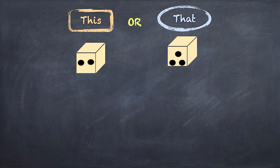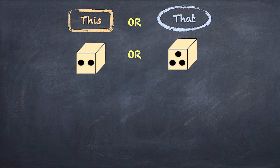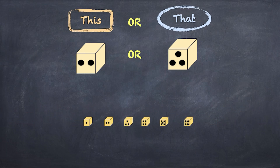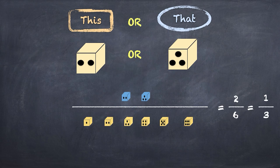But what about the probability of this or that happening? Let's think about throwing a dice and calculating the probability of throwing a two or a three. Either one or the other might happen, but not both — they're what we call mutually exclusive. If one of them happens, the other can't happen because we're only throwing the dice once. There are six equally likely possibilities as our denominator, and two possible outcomes meet our criteria. So the probability of rolling a two or a three is two over six, which is equal to one over three.